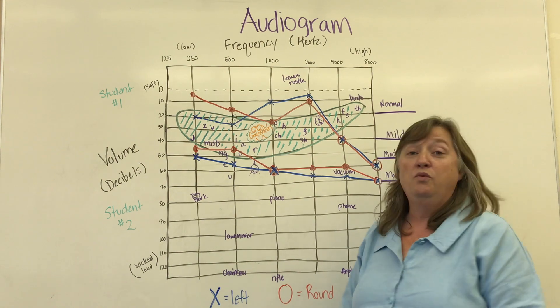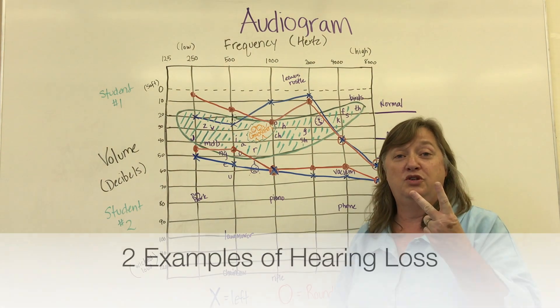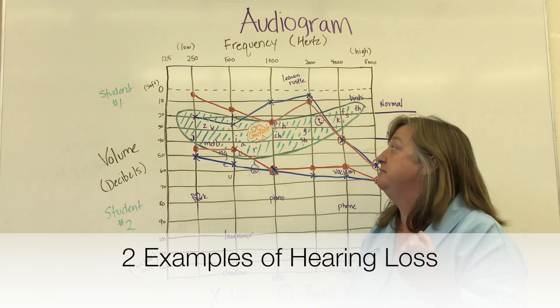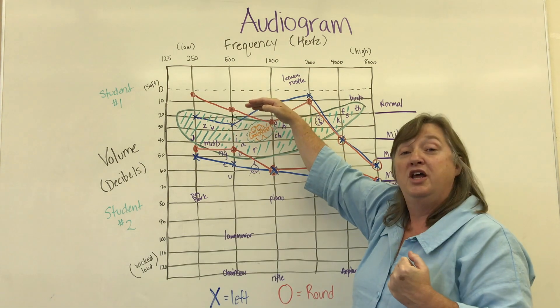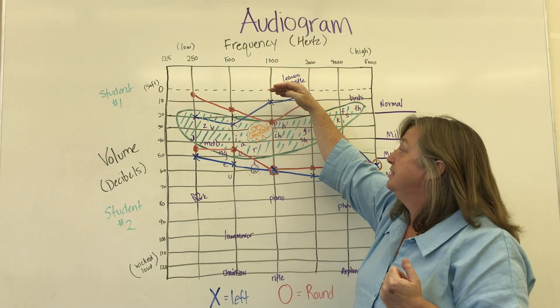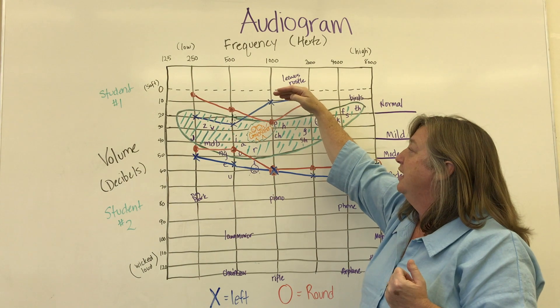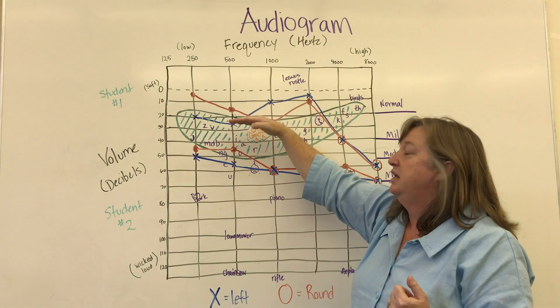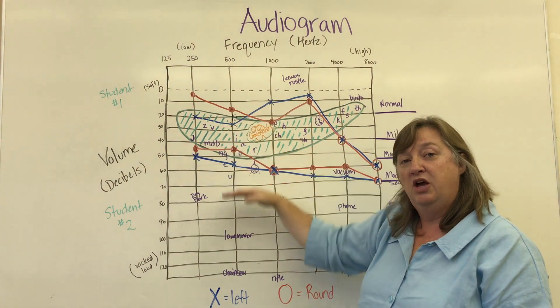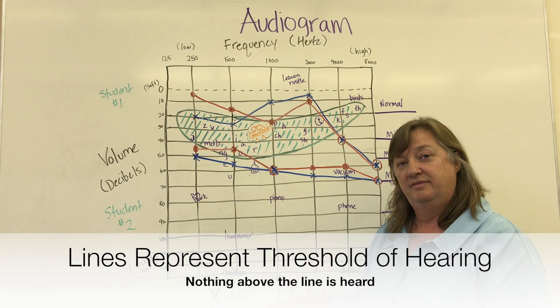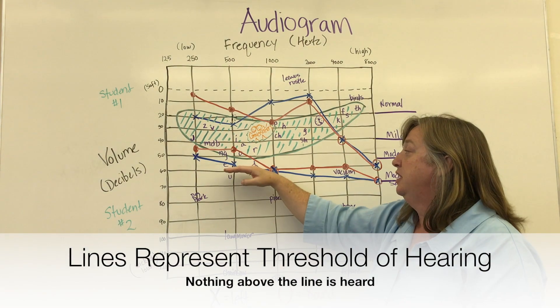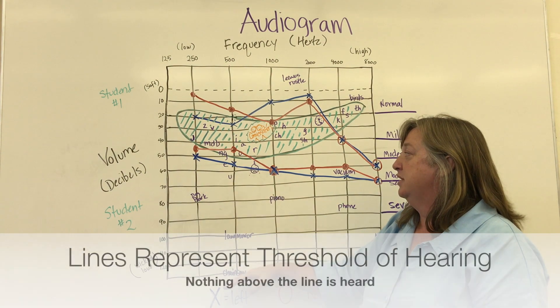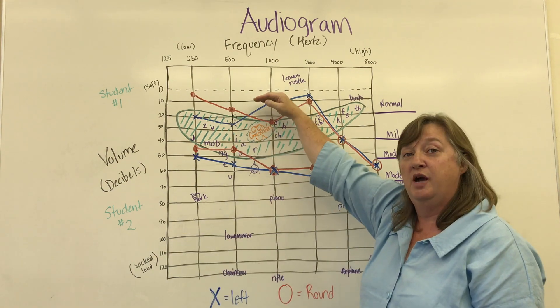So really briefly, I've put up two different students, two different kinds of hearing loss. What you want to know is that a student hears only what is below that line, or an ear hears only what is below this line. They do not hear anything above this line.